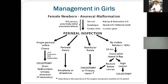This slide shows the management in girls — step by step. When a female baby comes with an absent anal opening, advise admission and different investigations to rule out VACTERL associations, then perineal inspection. In case of a single perineal opening — which occurs in 40% of female cases, a very big number — persistent cloaca is present. This is a complex defect and is managed with colostomy to drain the GIT.